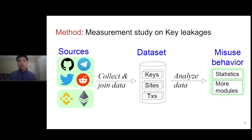To address the issue, we first collect the secret keys from GitHub, Twitter, Telegram, and Reddit. Then we analyze the dataset to find detailed information.